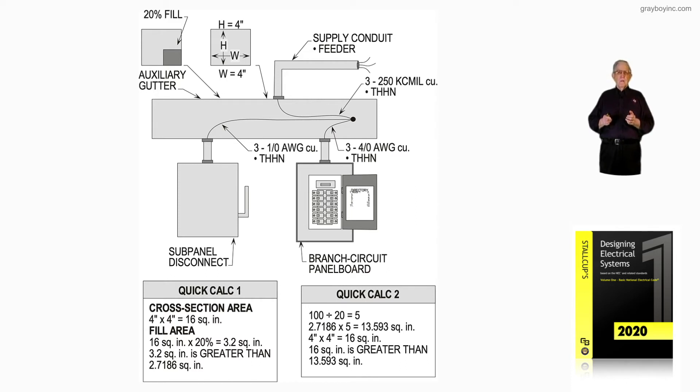Quick calc 1: if we used a 4x4 auxiliary gutter, and I will call this out again, the back inside cover of each design book, volume 1 and 2, has the standard size auxiliary gutters that you could purchase. A 4x4 is 16. You're allowed 20% fill in that auxiliary gutter. So 20% of 16 is 3.2 square inch area. 3.2 square inch area is greater than 2.7186 when we do the calculation.